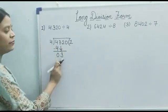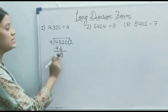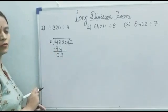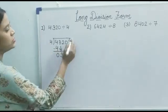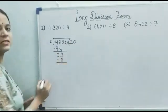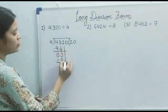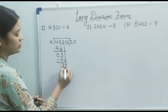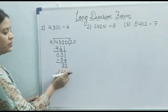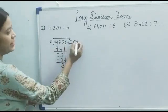Now we bring down 3 here. We again need to compare the number. Here 3 is smaller than 4 and does not come in the table of 4. So we use 4 zeros are 0. Then 3 minus 0 is 3. Then we bring down the next digit, that is 2.